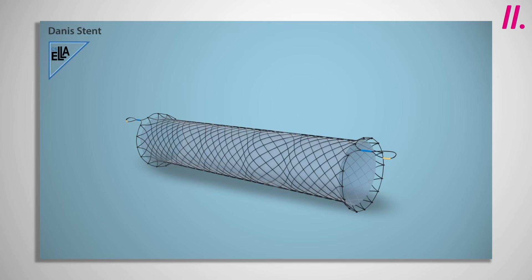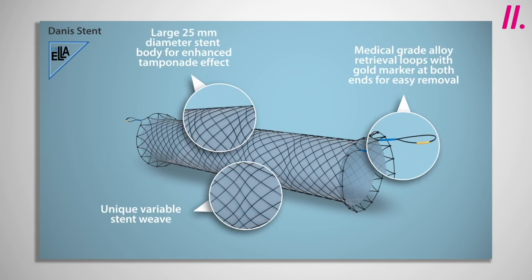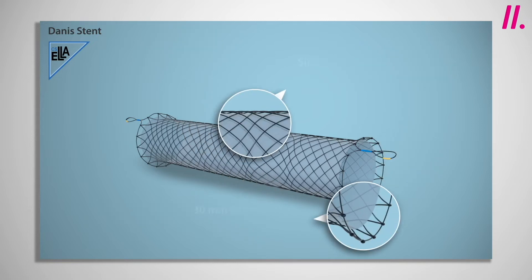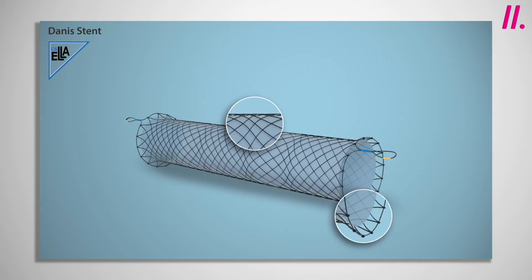The Danis stent is approved by NICE to treat uncontrolled variceal bleeding in adults. It provides tamponade to the bleeding site whilst also permitting continued dietary intake.